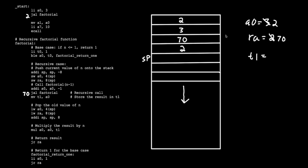We come back up to factorial and start again. However, now when we perform this test, A0 is less than or equal to 1, so we jump to the factorial return label. Here, we set A0 to 1, which it already is. And now we jump and return to the return address, which is 70. So we jump back up here, and we move A0 into T1, so T1 is 1.